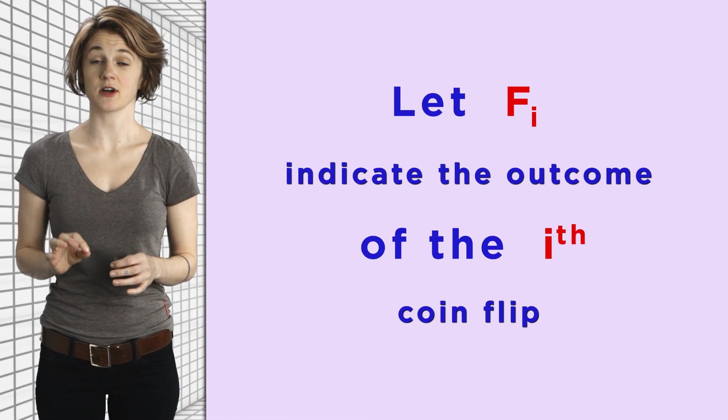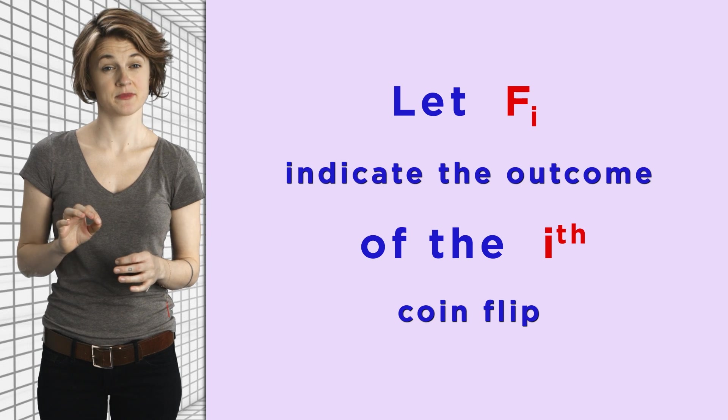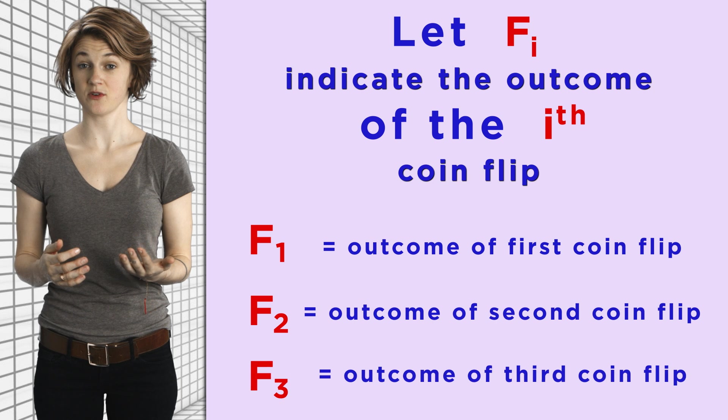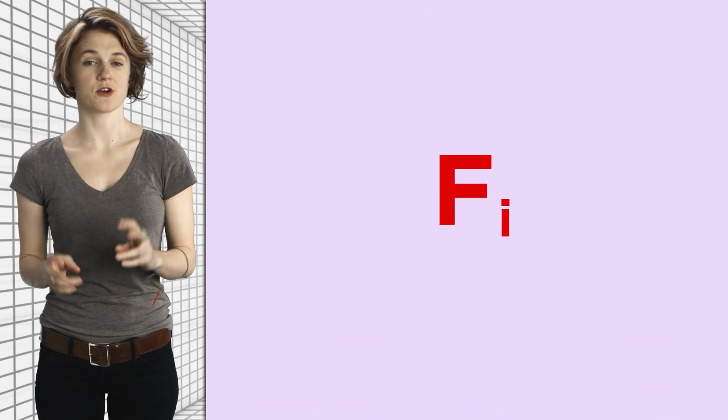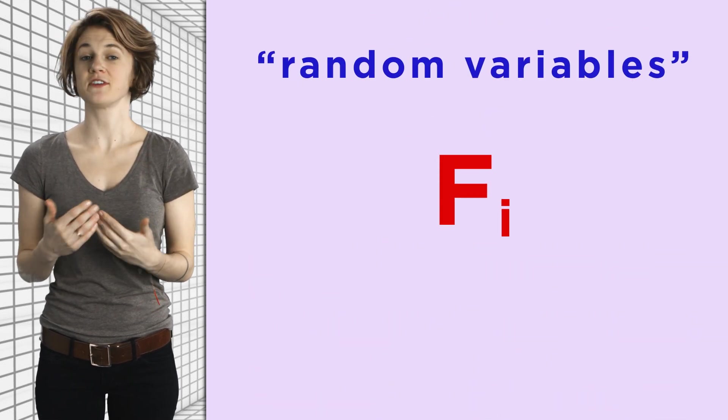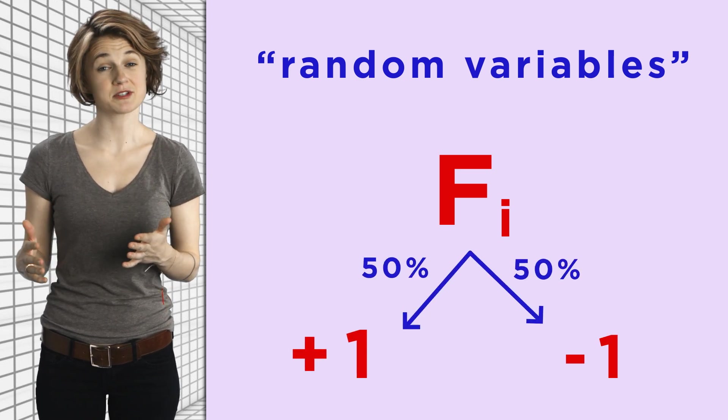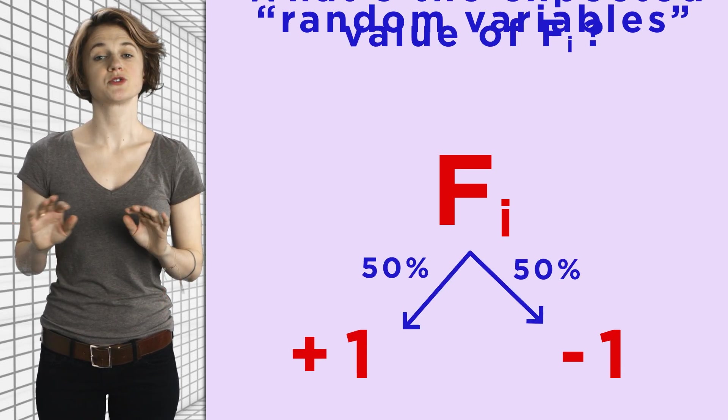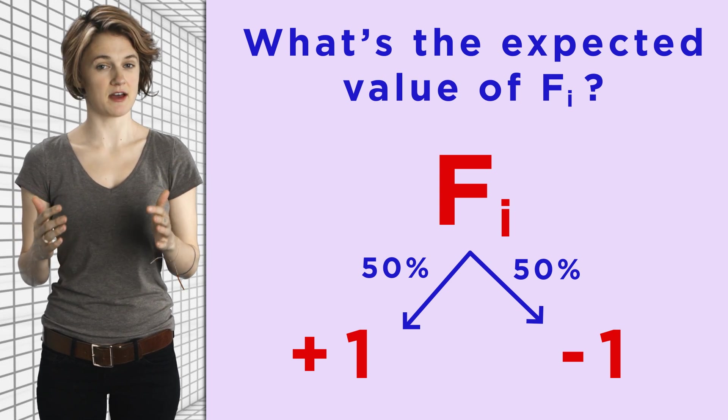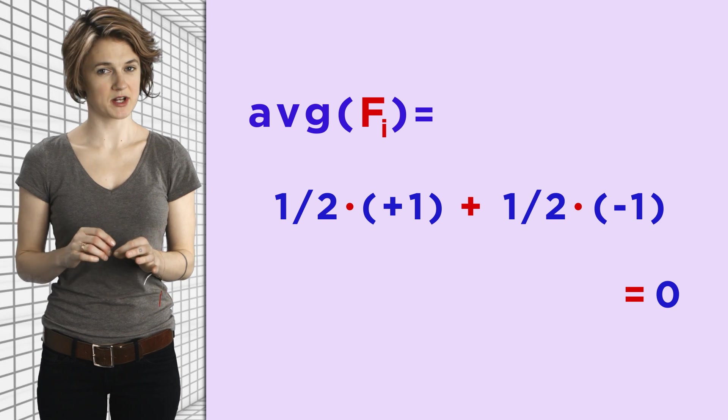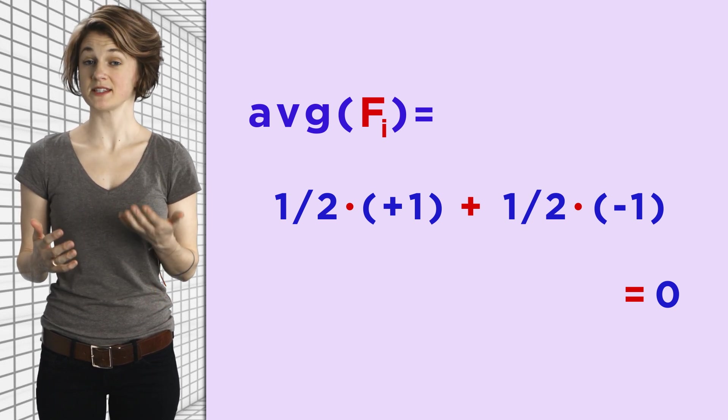Let's introduce some notation so that we can make the second observation more precise. Let F_i indicate the outcome of the ith coin flip. So F_1 is the outcome of the first coin flip, F_2 is the outcome of the second, and so on. The F_i are what's called random variables. The variables don't have a prescribed outcome—they have a 50% chance of being plus 1 and a 50% chance of being minus 1. So what's the expected, or average, value of F_i? We calculate one-half times plus 1 plus one-half times minus 1, so the expected value is 0.